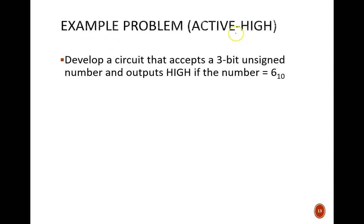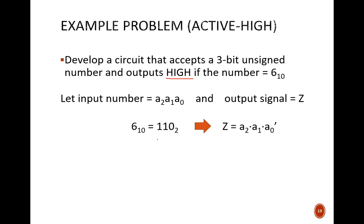Here, the task is to develop a circuit that accepts a 3-bit unsigned number and outputs high if the number equals 6 in decimal. We begin by defining the input and output variables. Then, we take advantage of our knowledge that binary 110 equals decimal 6. This means that we can use the minterm a2 and a1 and a0 prime to define the output.